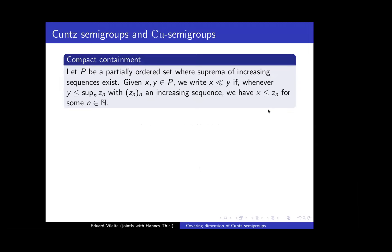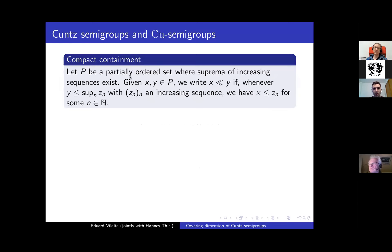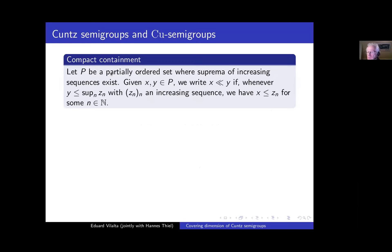Before I actually define what this notion of covering dimension is, let me briefly recall what CU semi-groups and Küng's semi-groups are, since these are the objects that we want to study with this notion. The first thing I want to introduce is that of compact containment relation. Given a partially ordered set P where we assume that suprema of increasing sequences exist, we say that an element x is way below or compactly contained in y, if whenever y is bounded by the supremum of an increasing sequence, then there exists some element in that sequence that actually bounds x. So x is not only bounded by the supremum of this sequence, but by one of its elements. In particular, x being compactly contained in y implies that x is less than or equal to y.